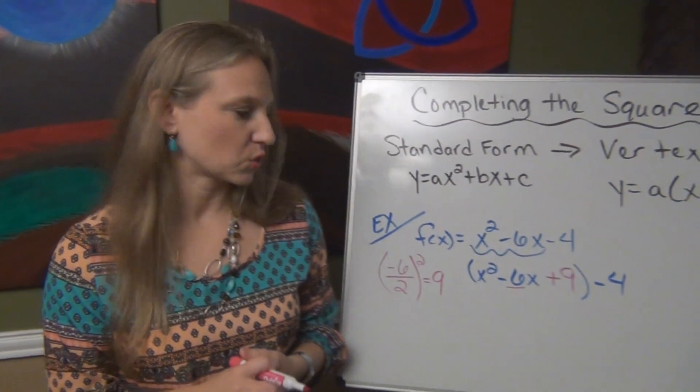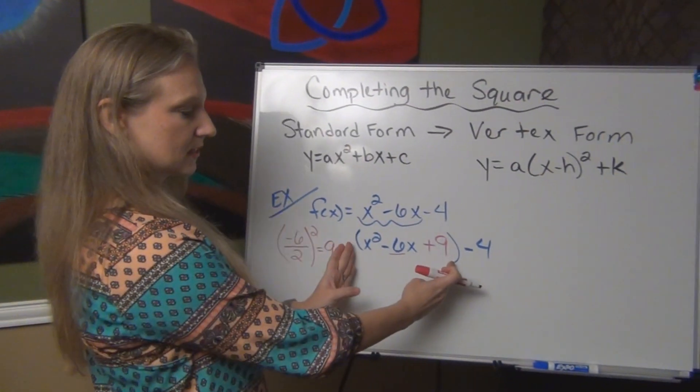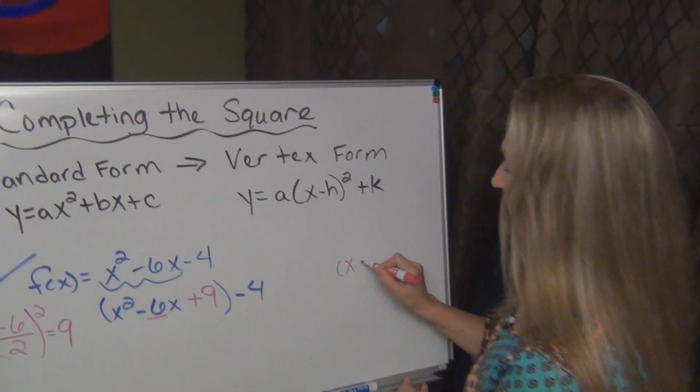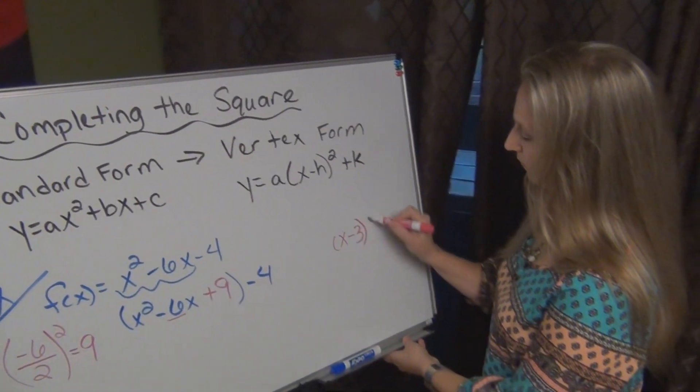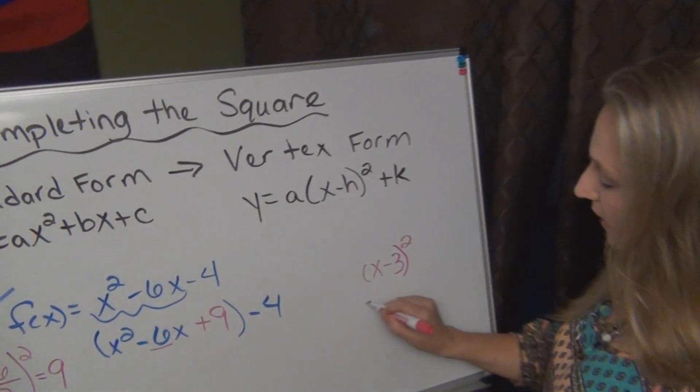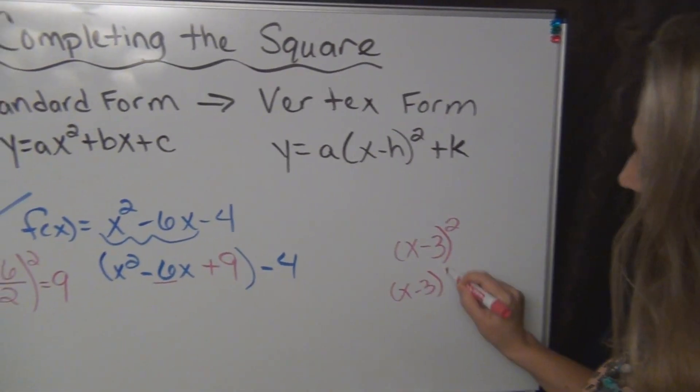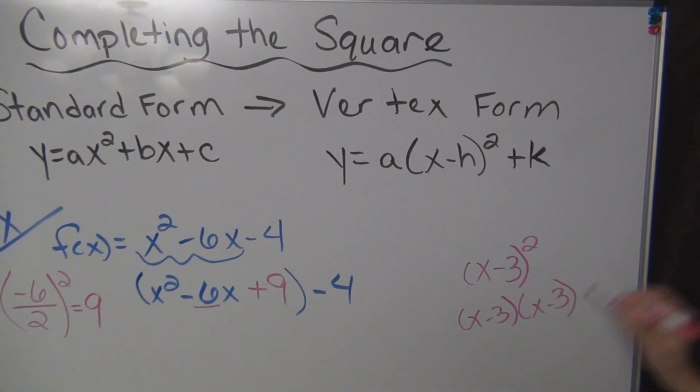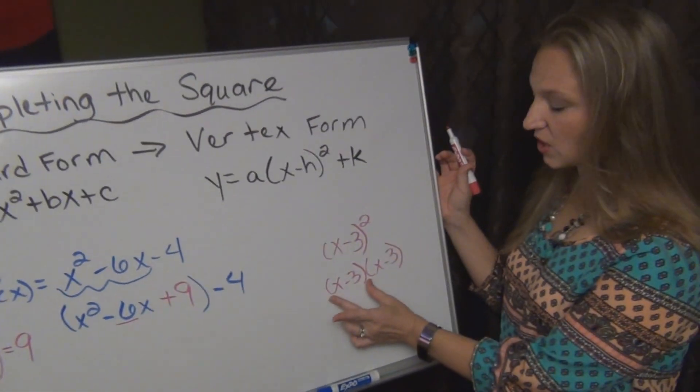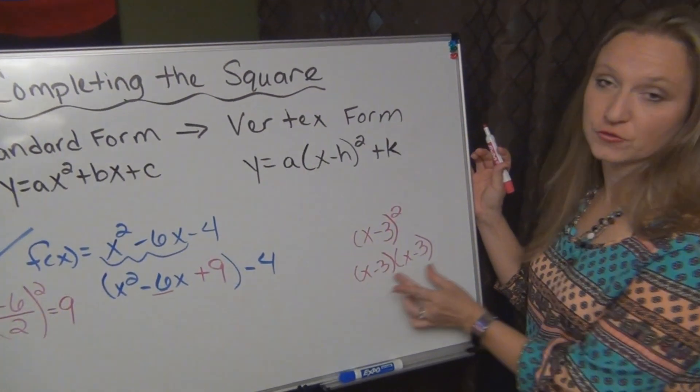Let's talk about what I mean by a perfect square. Because this trinomial can be rewritten as a square. Because if I was going to multiply this out, I know that any time I have a square, that actually means that it's that thing multiplied by itself twice.